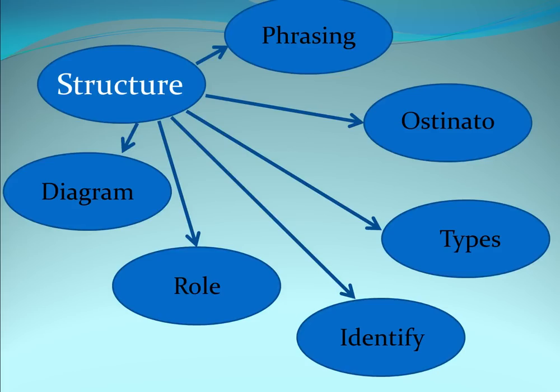So for structure you need to be thinking of potty road. The way I remember it is the structure of the road had potholes basically. So P for phrasing, O for ostinato, T for types, I for identify, R for role and D for diagram.